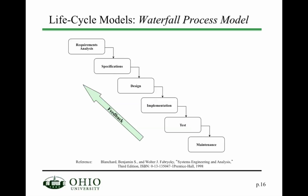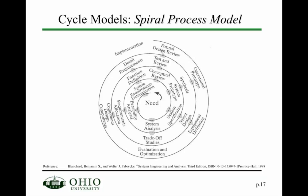Besides this traditional waterfall model, there are two others included here. One is the spiral process model. Rather than the waterfall approach, it starts with the need, and the life cycle progresses along the spiral. Along the radials of this spiral are indicated the similar activities — system requirements determination, function definition, detail requirements, and implementation — with increasing levels of detail at each point.